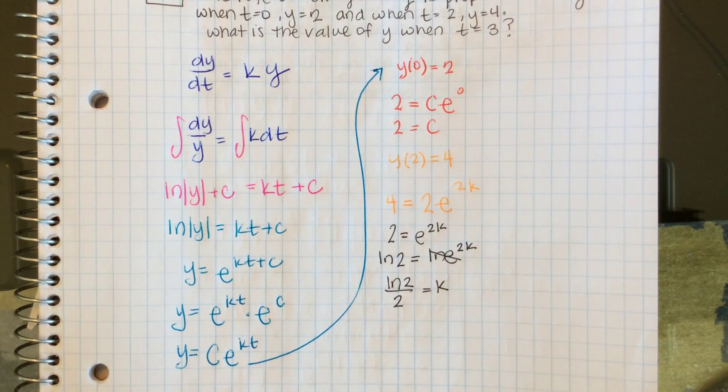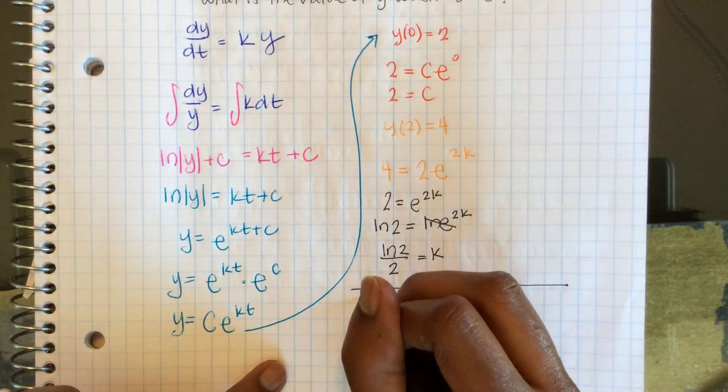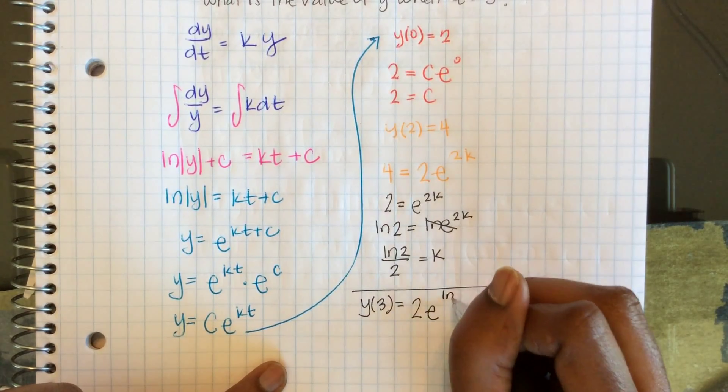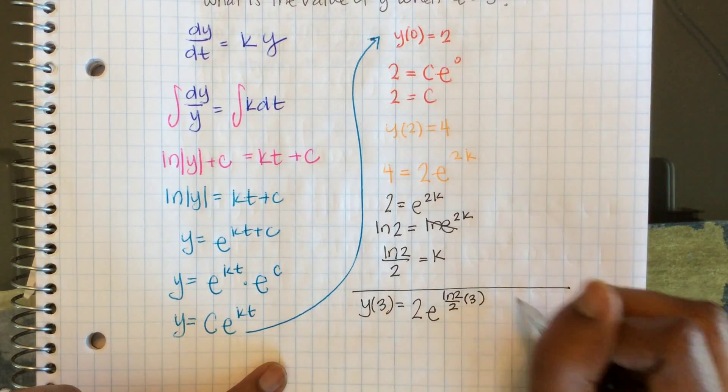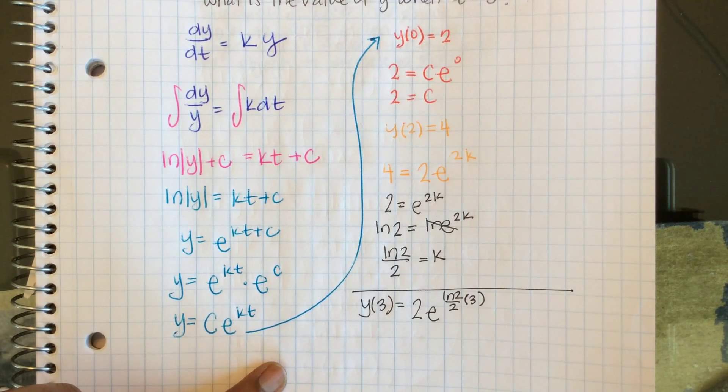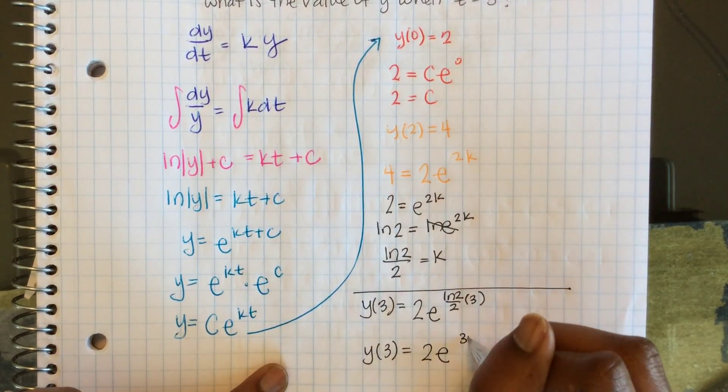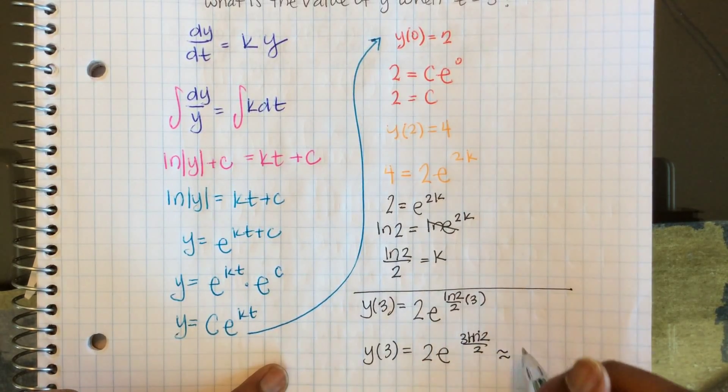Now that I know k, I can plug in t = 3. So finally, y(3) = 2e^((ln(2)/2)·3) = 2e^(3ln(2)/2). You could plug that into your calculator for a decimal approximation, but this is the exact answer.